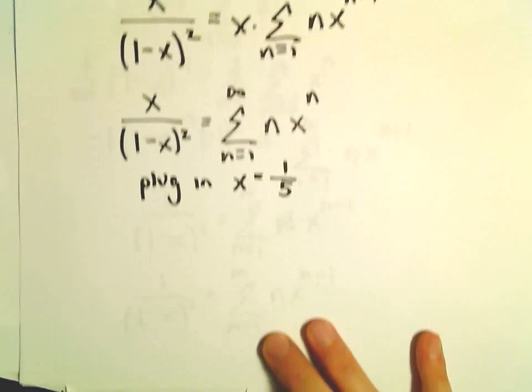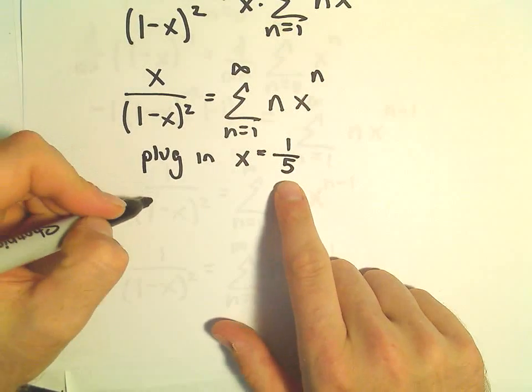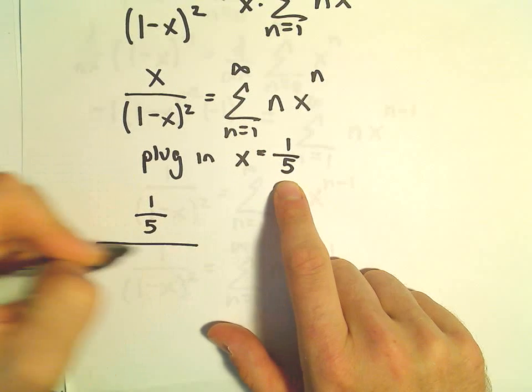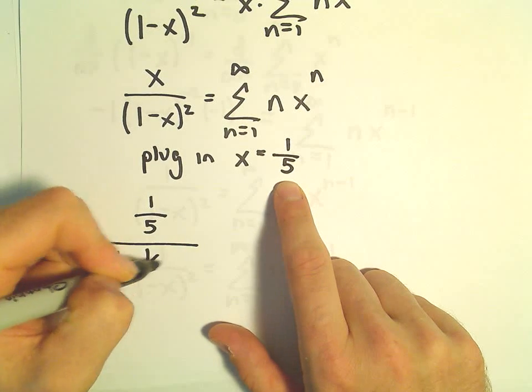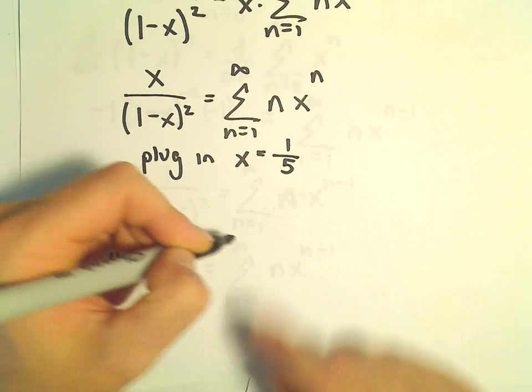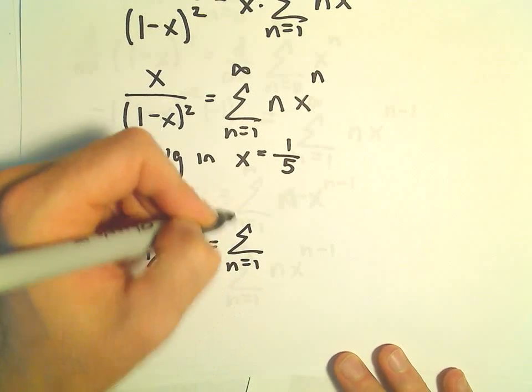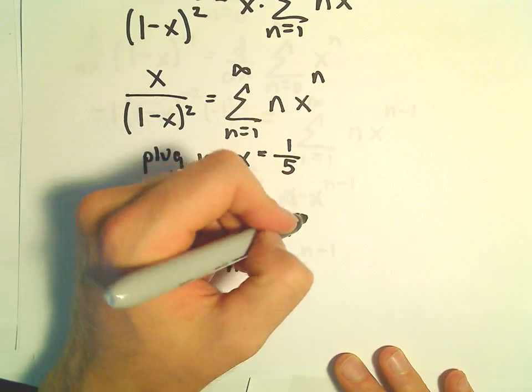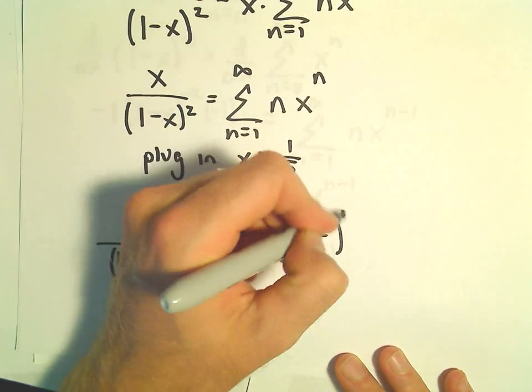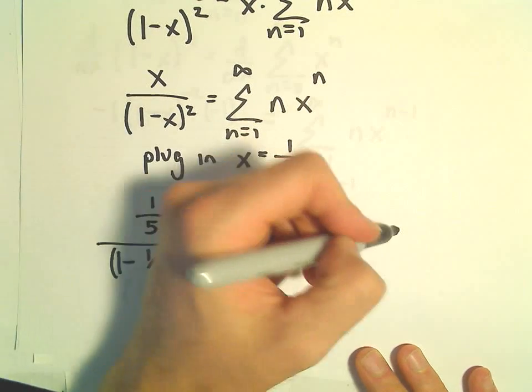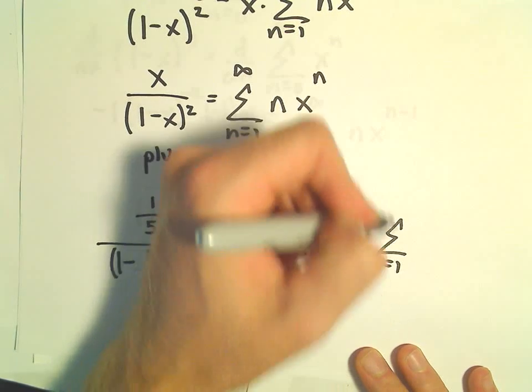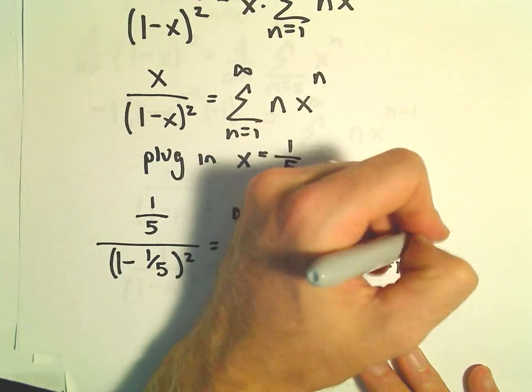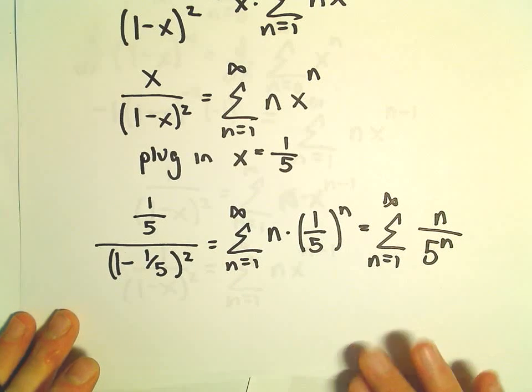Okay, right, the five's in the denominator. If we plug in one-fifth, on the left we have one-fifth over one minus a fifth squared. Well, on the right side we would have n equals one to infinity of n times one over five raised to the n power. But again, we could actually rewrite this as n equals one to infinity of n over five to the n.